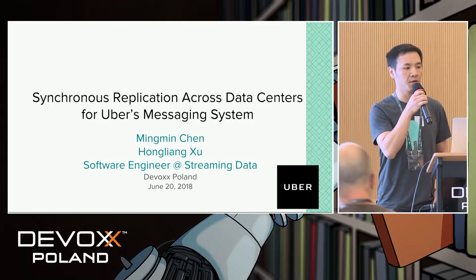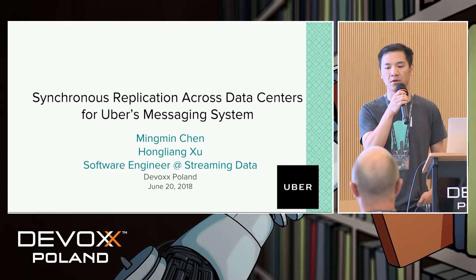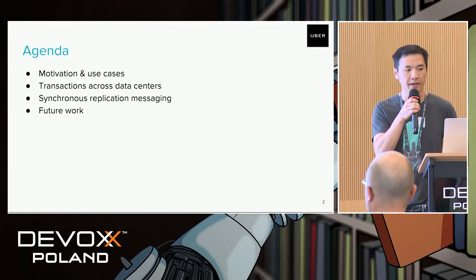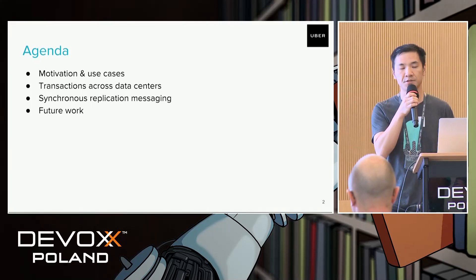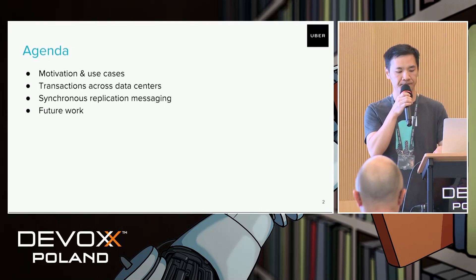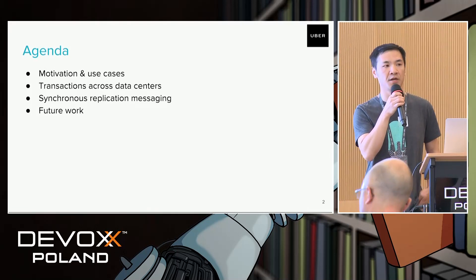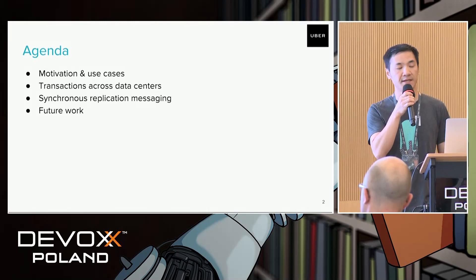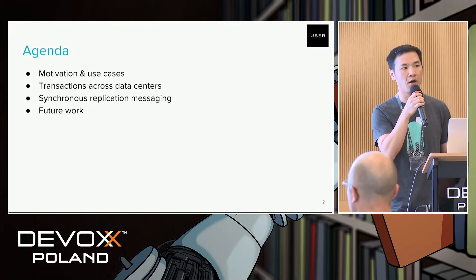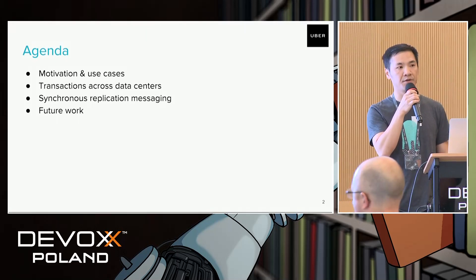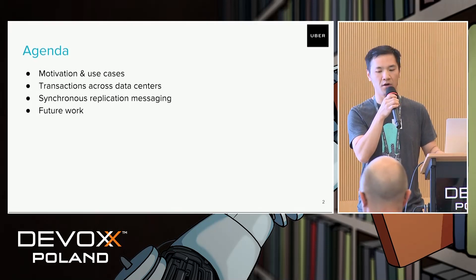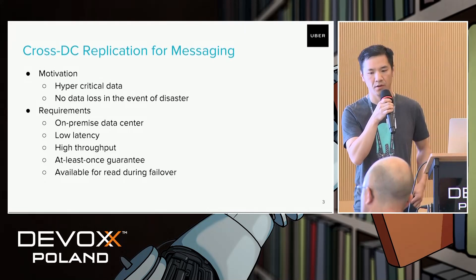Today we will be talking about how we do synchronous replication across multiple data centers for our matching system. Here is the agenda: we will first talk about some of the motivations and our use case for synchronous replication across multiple data centers, then discuss challenges for transactions across data centers for a typical storage system, then our setup and failure scenarios we want to support, and finally future work on our roadmap.